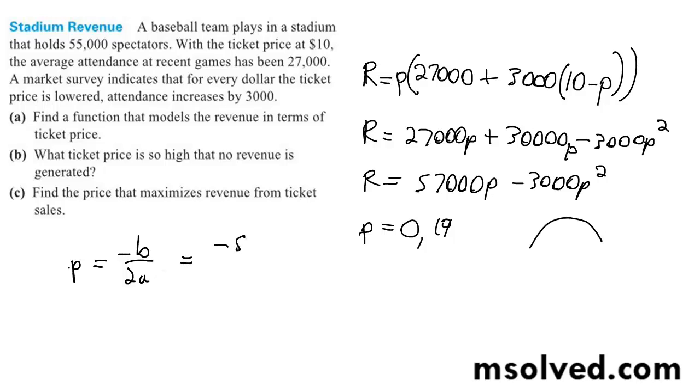So we get negative 57,000 over 2 times negative 3,000. So the sweet spot for pricing the ticket is $9.50. That's it.